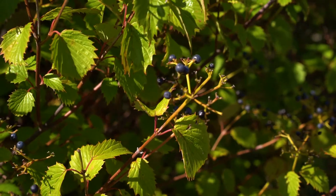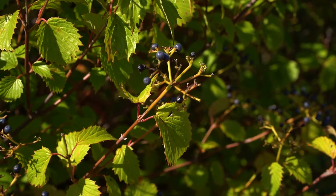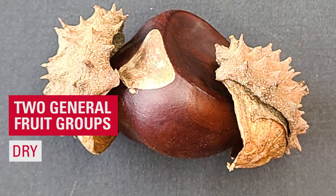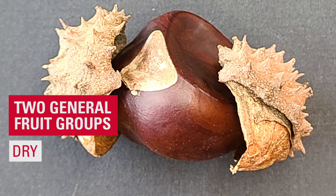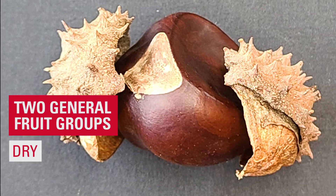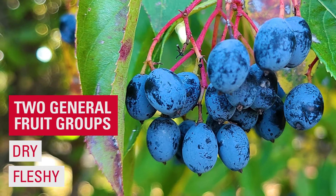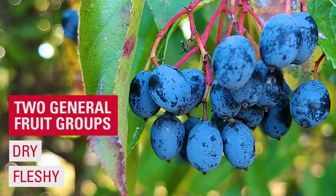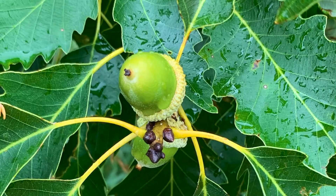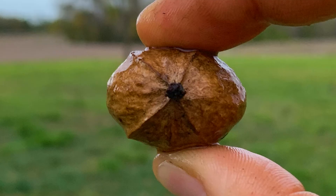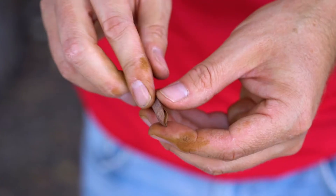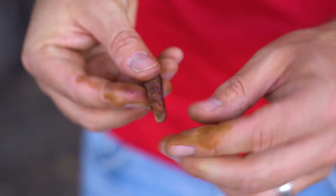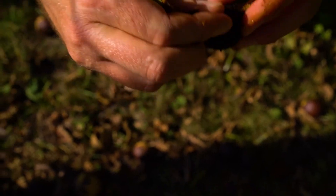Using form, we can place tree fruits into two general groups: dry, such as nuts, legumes, and capsules, and fleshy, such as drupes, pomes, and berries. Dry fruits can be further placed into two general groups: splitters, those that split along definite seams when mature, and those that do not.